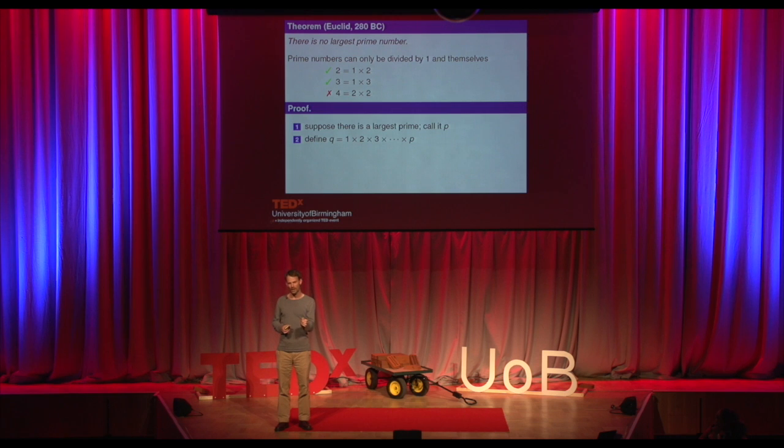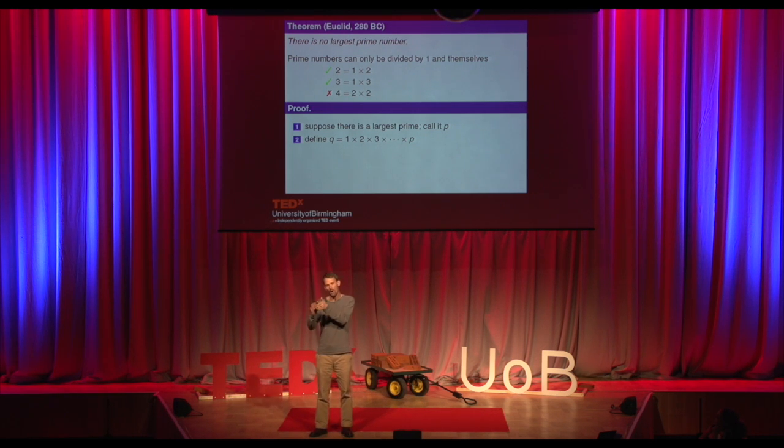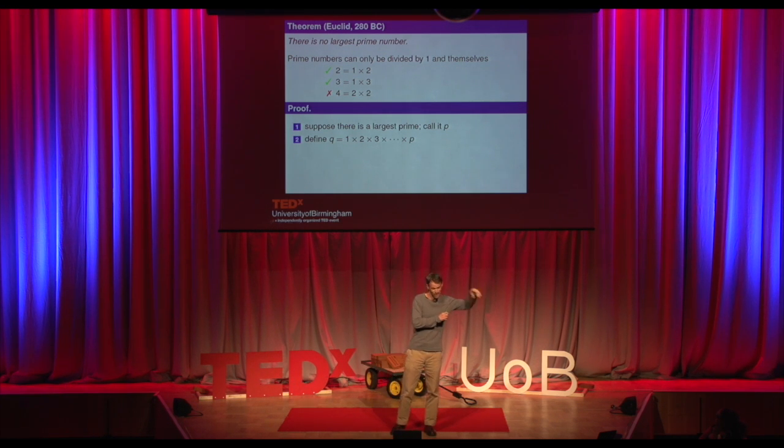Step two: we're going to define a new number called Q. Q is going to be much bigger than P. Here's how we form Q: one times two times three times four times five times six, all the way up to times P. So Q is really big at this point. If P was the largest prime number you could think of, Q is far larger than it. Now, the number we're really interested in is Q plus one. Q itself is a multiple of all the numbers from two all the way up to P, so Q is divisible by two, three, four — all the way up to P. But Q plus one isn't. If you divide Q plus one by two, you get something and a half; divide by three, something and a third; divide by four, something and a quarter — because it's just one bigger than all of these multiples.